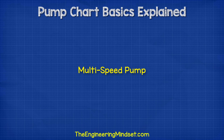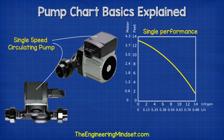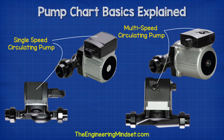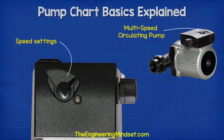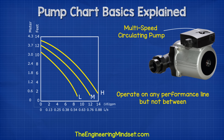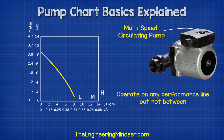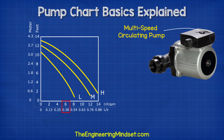Multi-speed pumps. Some pumps operate at a fixed speed and therefore have a fixed performance curve, but we can also get multi-speed versions which have the ability to switch between speed settings. Typically these come with three different speeds — low, medium and high — so these pumps will have a chart with three different profiles plotted on them. We can operate the pump at any of these curves, but not between them. So for this example, if we wanted 6 gallons per minute or 0.3 litres per second, then on setting one we would get around 4.2 feet of head, on setting two we would get 8 feet, and on setting three we would get around 9.8 feet.